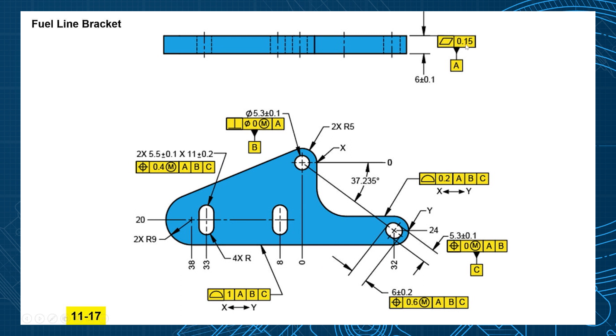So back face is A, nice flatness tolerance on there. We have this hole as B, that's going to set the origin of the coordinate system. Now we still need to clock it, orient it, and so we have C as this width of the slot here. So our datum reference frame is going to be aligned like this through the part.